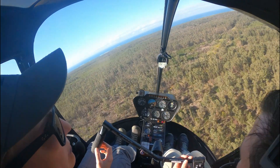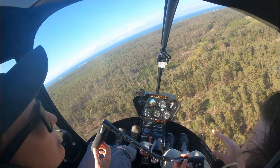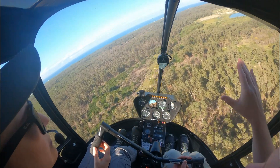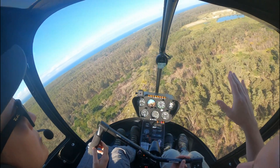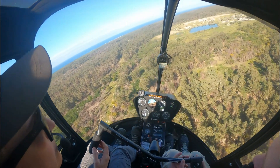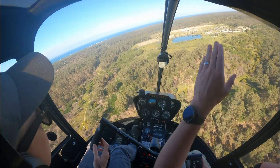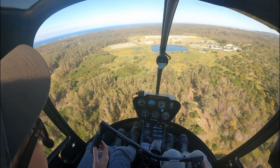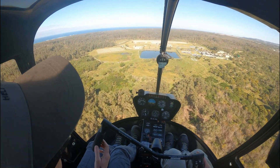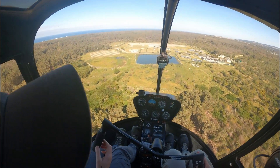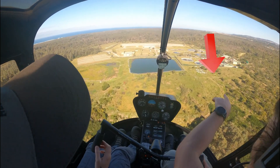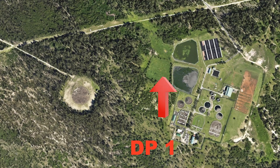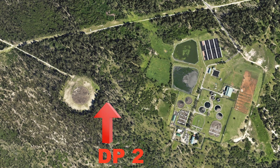And of course again we check for low hanging wires and the wind direction. Now we fly away from the landing zone on our downwind leg and it's at this point where we choose two spots called decision point one and decision point two.